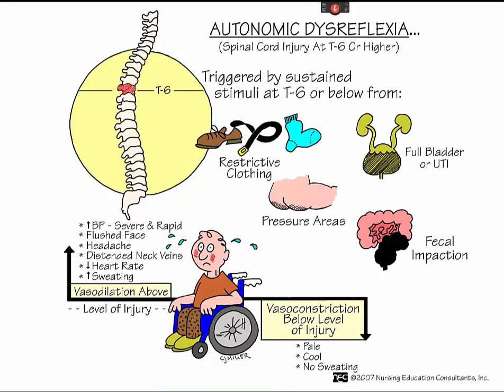Autonomic dysreflexia is a massive, uncompensated cardiovascular reaction mediated by the sympathetic nervous system. It can occur when reflexes return after spinal shock if the injury level is T6 or above, in response to visceral stimulation. Bradycardia is seen with T6 and above injuries. The most common cause is overfilling of the bladder — due to a blockage in the urinary drainage device, bladder infection, inadequate bladder emptying, bladder spasms, or bladder stones. The second most common cause is a bowel full of stool or gas; any stimulus to the rectum, such as digital stimulation, can trigger a reaction.